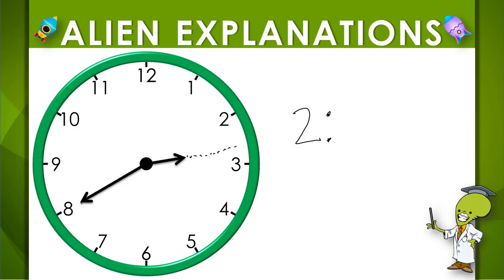Now let's count by fives to where the minute hand stops. Five, ten, fifteen, twenty, twenty-five, thirty, thirty-five, forty. So two forty. One more example.